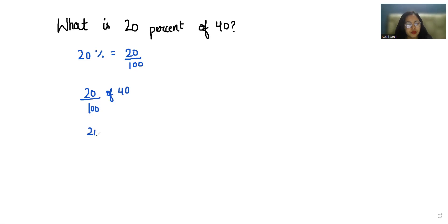So 'of' is removed and we write multiplication, and we can solve it by eliminating the zeros from numerator and denominator. What is left? 2 times 4 by 1, that is 8 by 1, which equals 8. So 20% of 40 is 8.